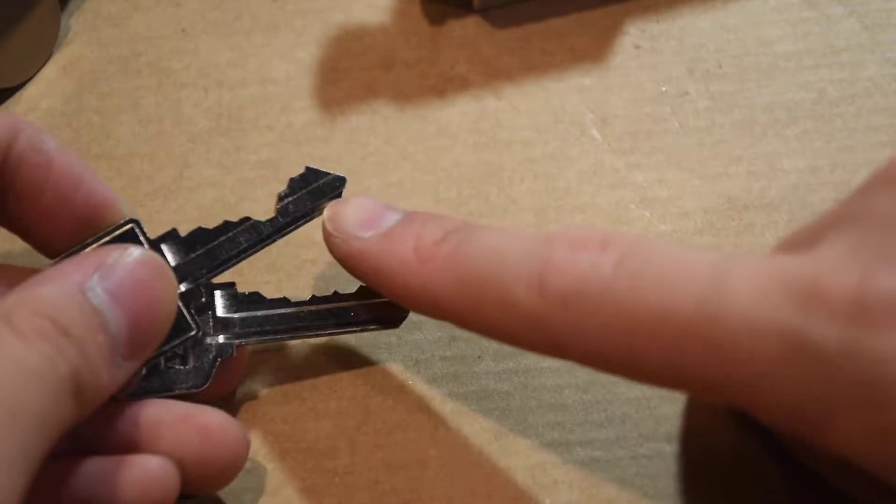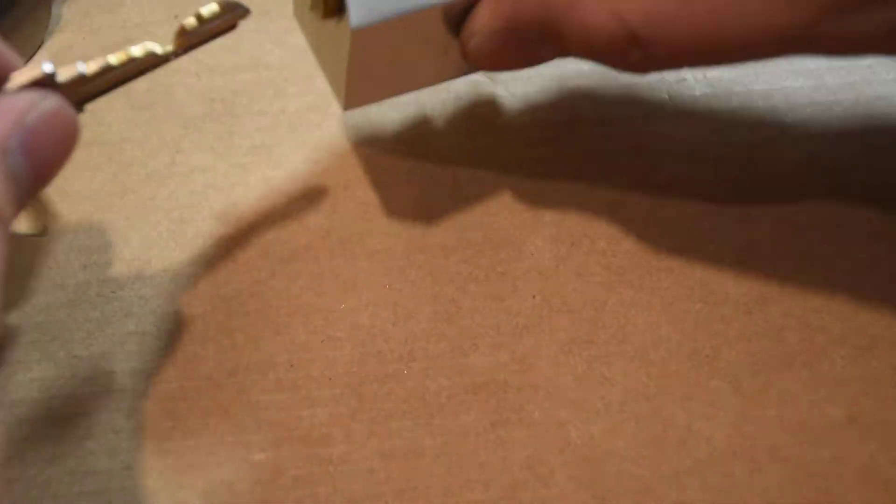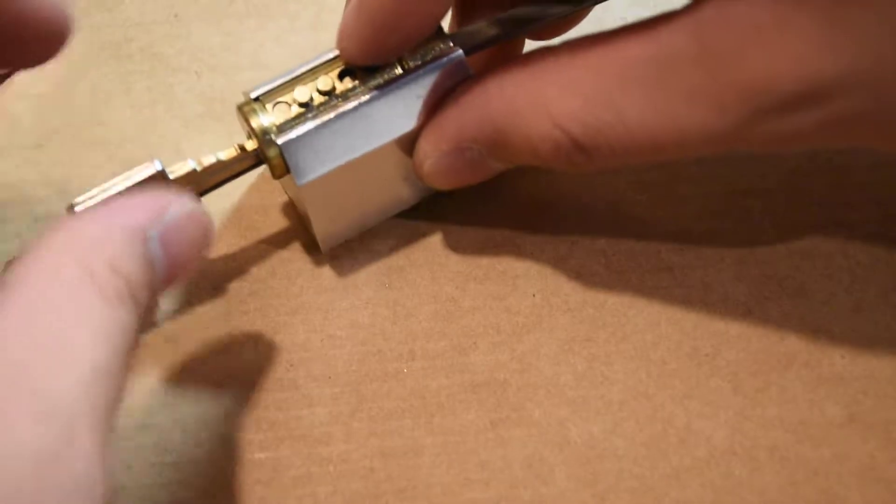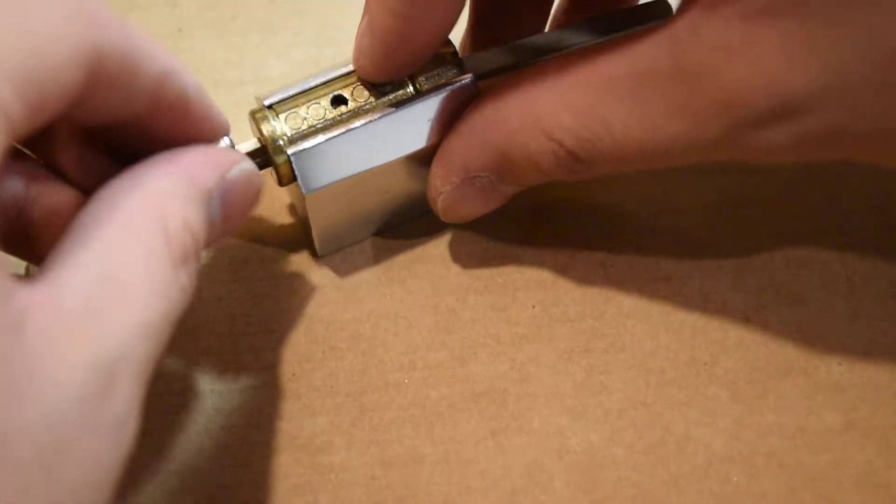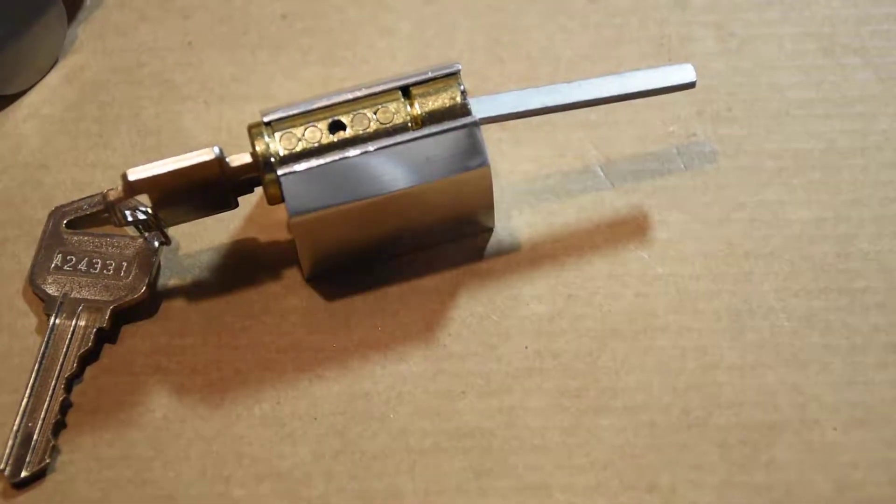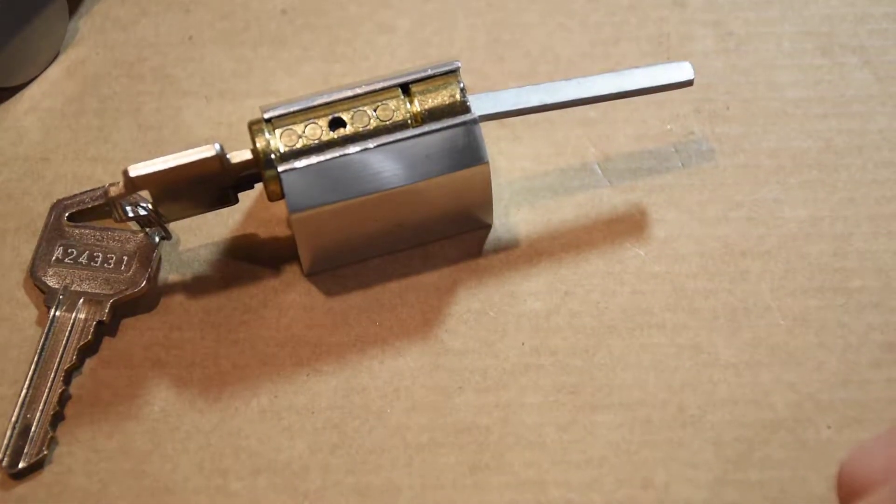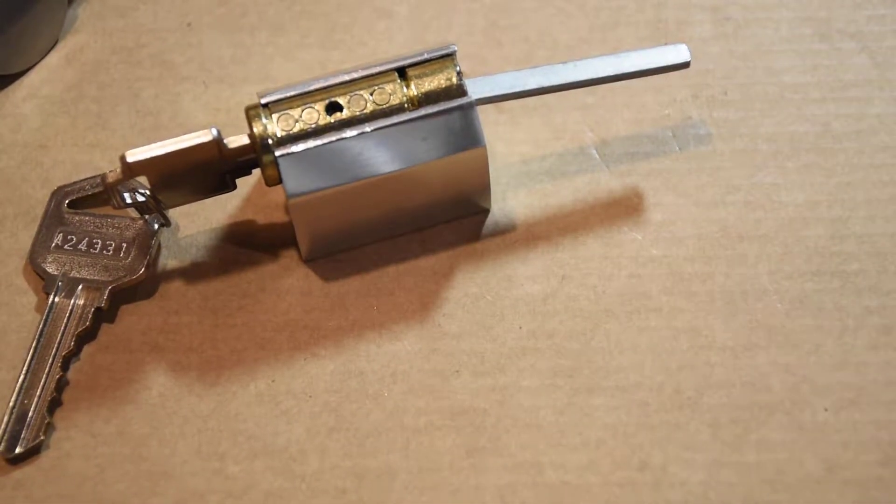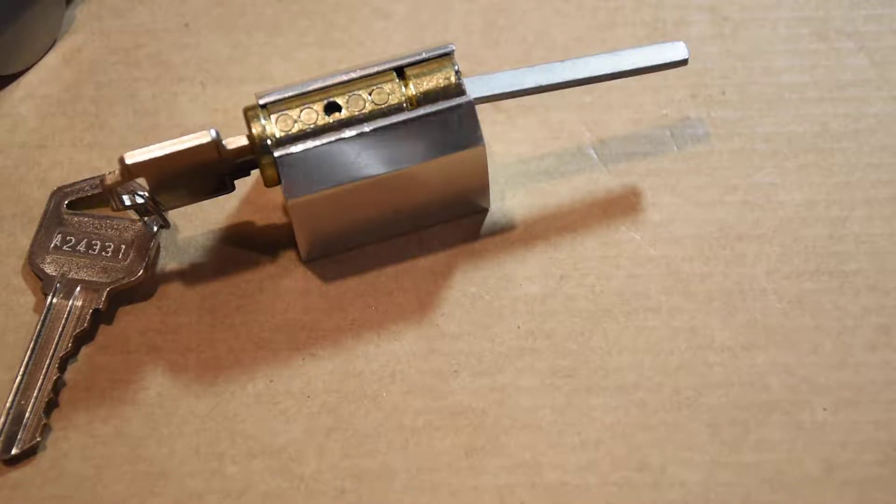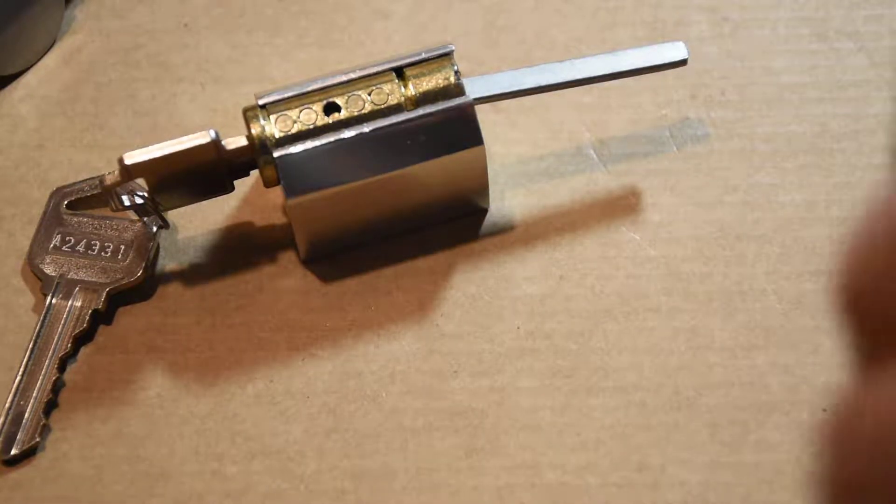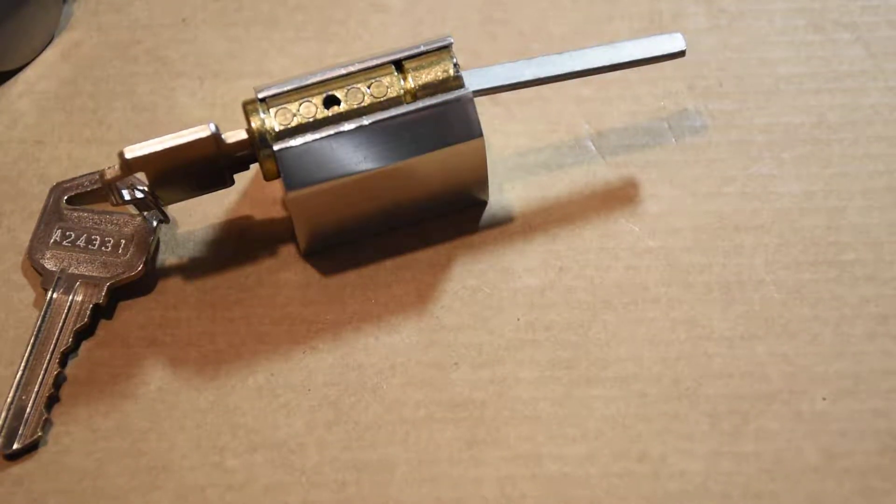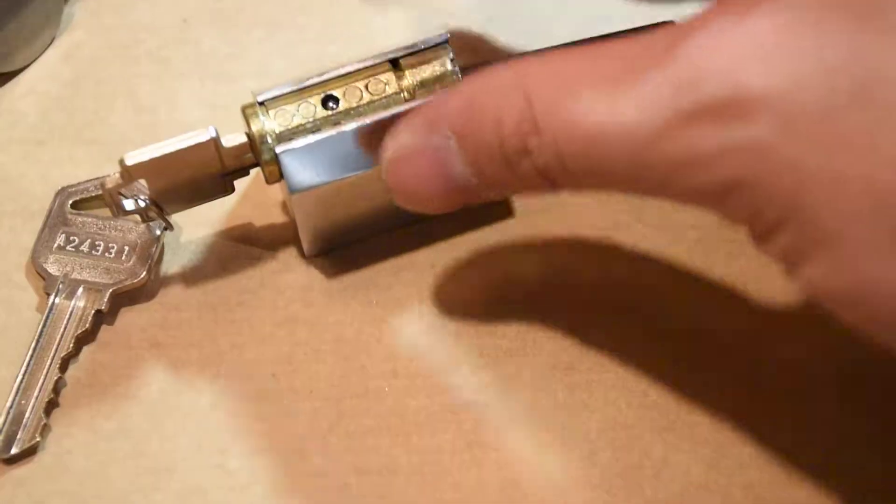But, before that, we have the construction key. The construction key, the reason why it works is because we have a ball bearing right here. What happens is that it should not fall out, obviously it would not, if it were actually inside of the lock body.